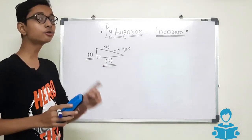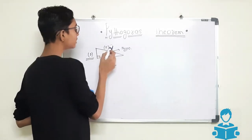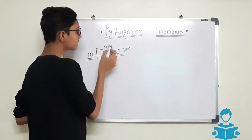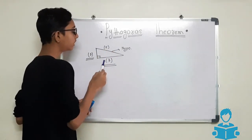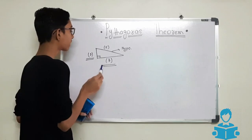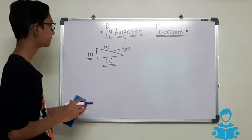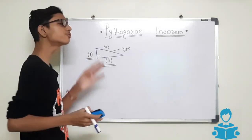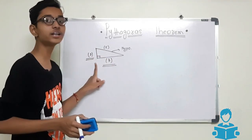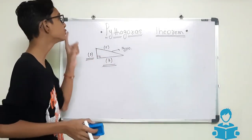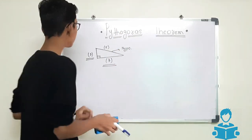We learnt two conditions, in which we found the value of hypotenuse, then we found the value of B. And now we will see how to find the value of A. To find the values in all three conditions, we have to use the same formula, which is known as Pythagoras theorem.